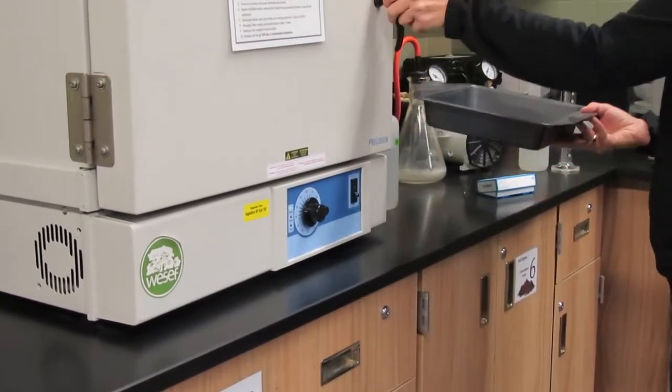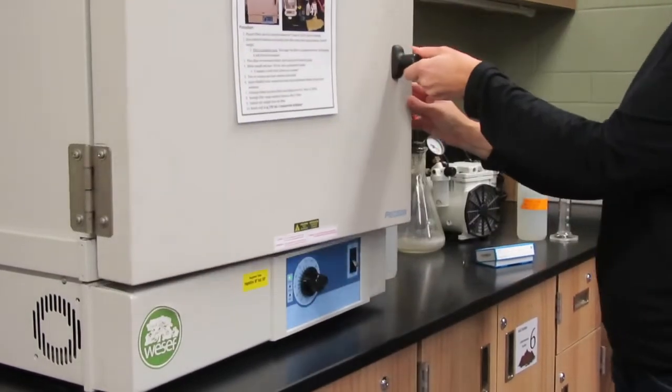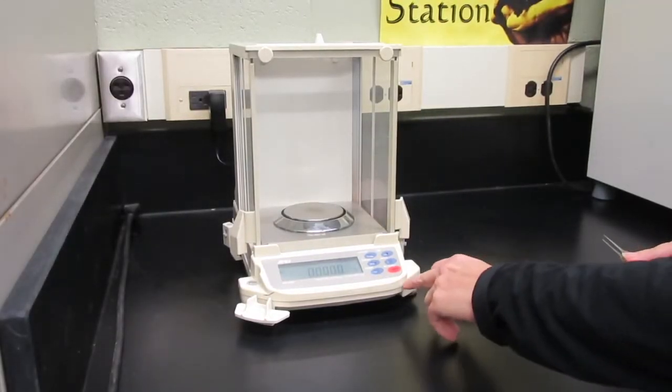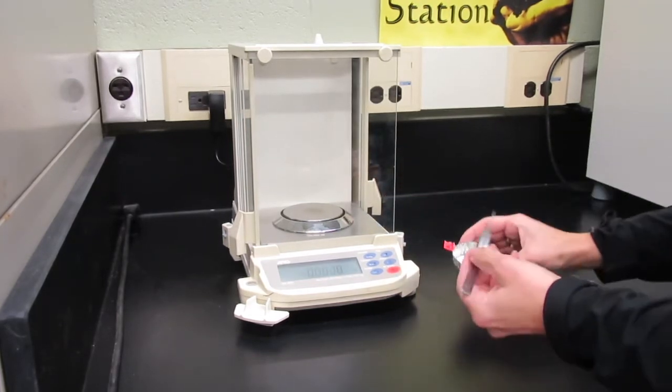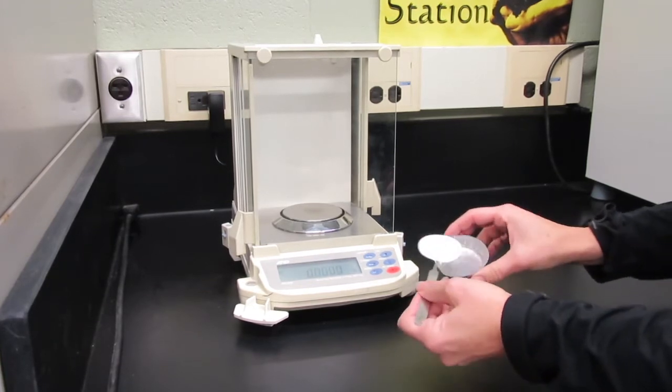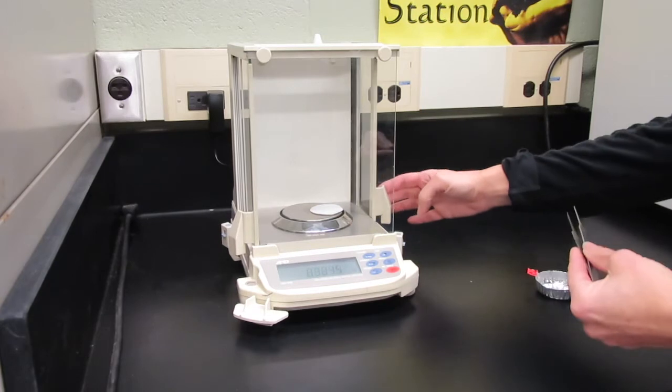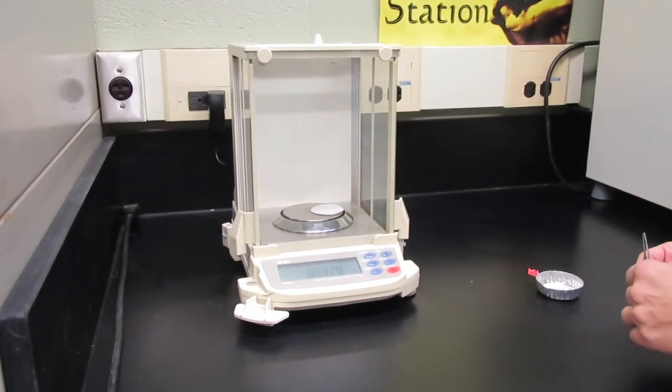In the meantime turn on the scale and allow it to warm up and stabilize. After one hour, zero the analytical balance and quickly place the filter that was in the oven using the tweezers onto the scale. Weigh the filter without the tin and record the weight. This is your clean dry filter weight.